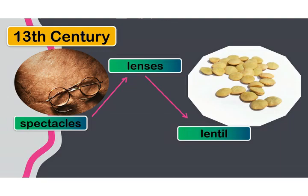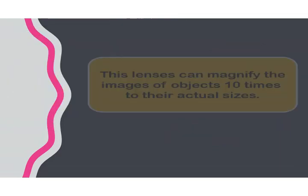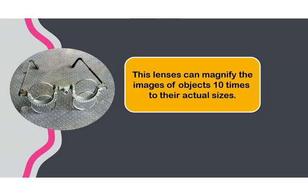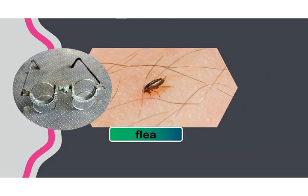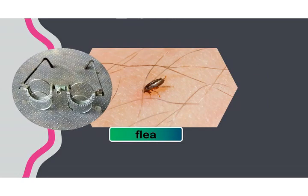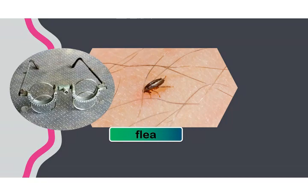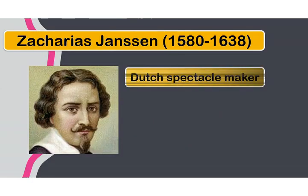They were called lenses, which came from the Latin word 'lentil,' because they are shaped like a lentil bean. These lenses can magnify images of an object 10 times their actual sizes. Because many people were often using these to view fleas and other tiny creeping animals, they were called flea glasses.